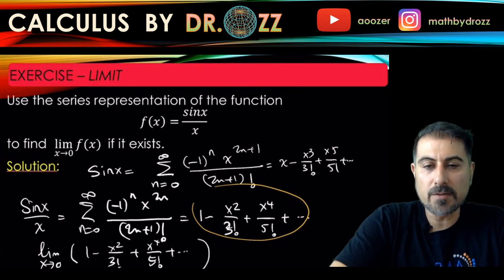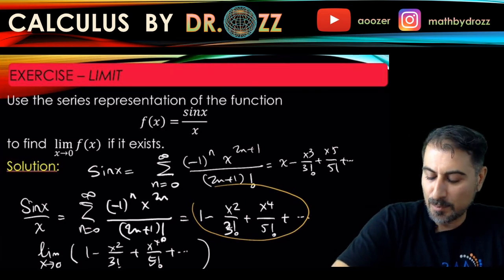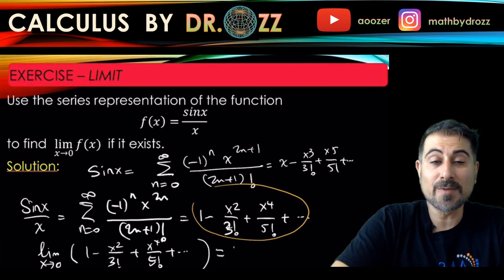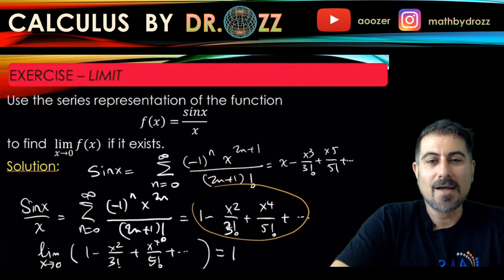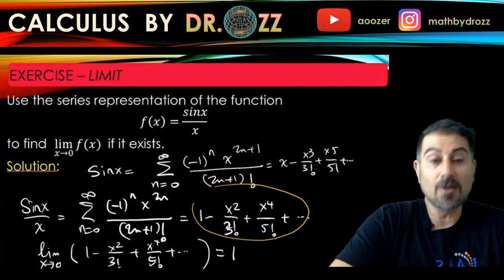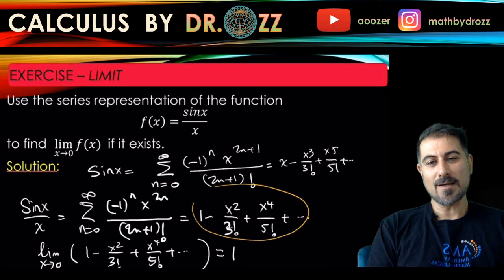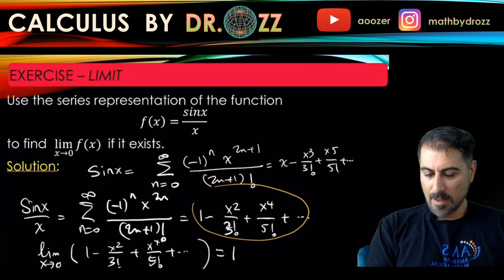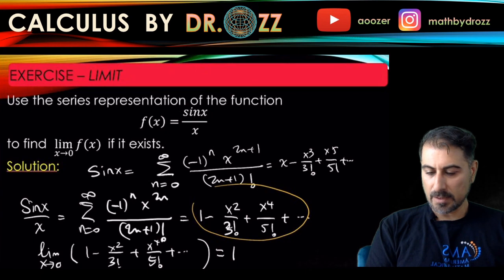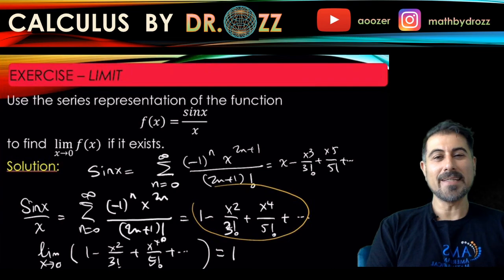When you plug in 0 for x, all of those terms are going to be gone and we will deduce that the limit of sin(x)/x at 0 is going to be 1. That's an awesome result because we did not use L'Hôpital's rule or table of sample values. We just used the power of the power series to get down to the same limit value 1. That's it, I think we got the final result and that's the end of the video. Thanks for watching, I'll see you in another video.